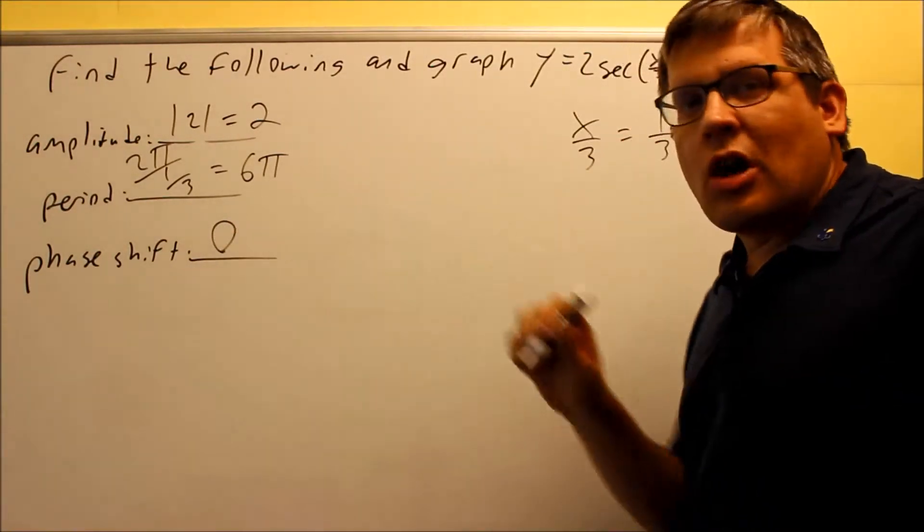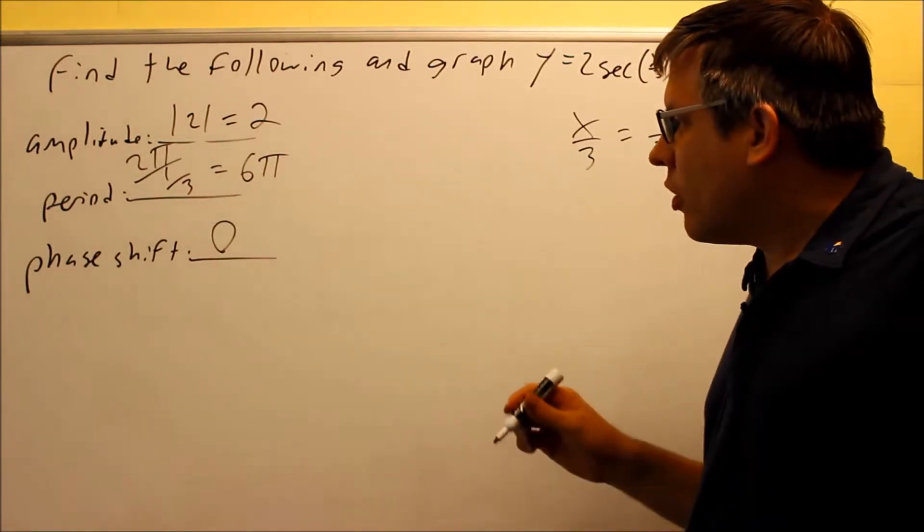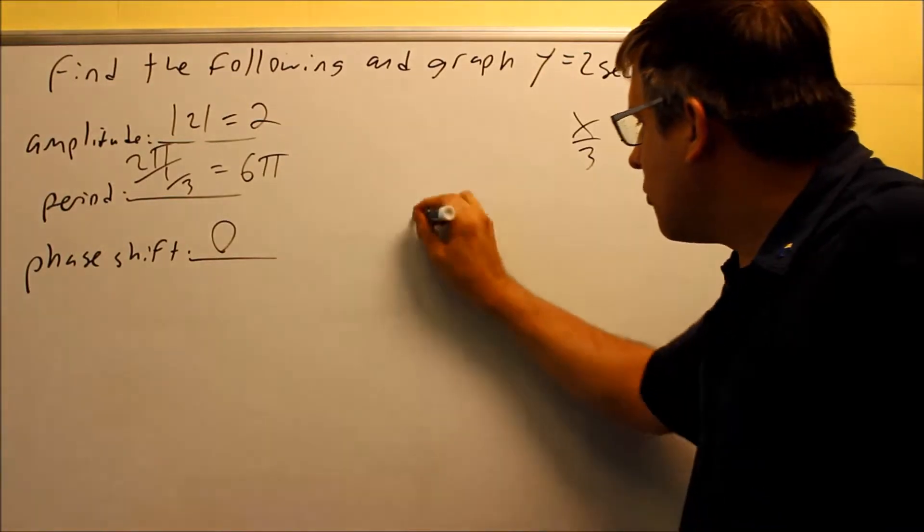0 would be the starting point for my graph. So I'm going to go from 0 to 6π. I just have to find out what my key points will be.